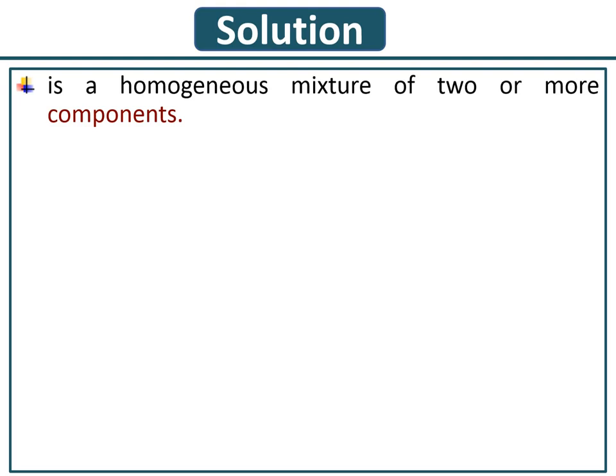If both materials are from the same phase, then the one that has the larger quantity will be the solvent. So liquid and liquid — the one that exists in the larger amount will be the solvent and the one that exists in the smaller amount will be the solute.